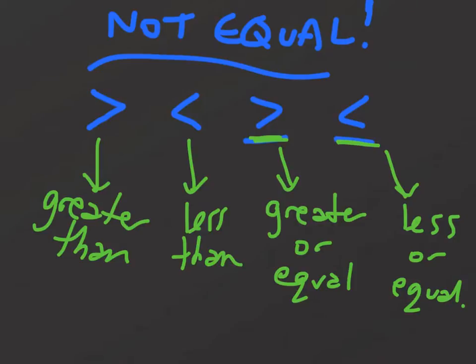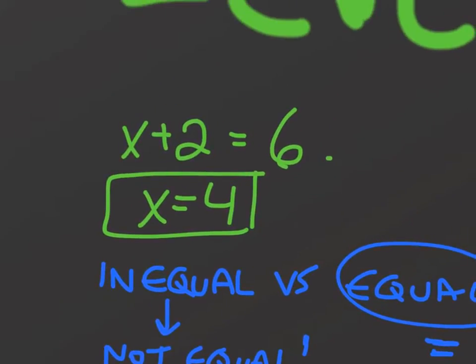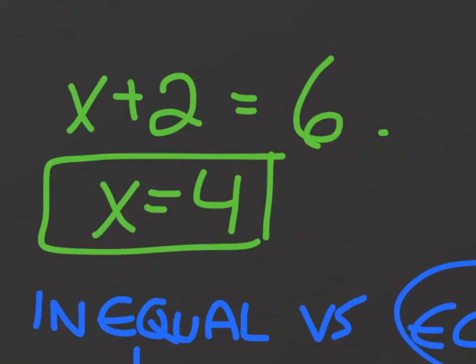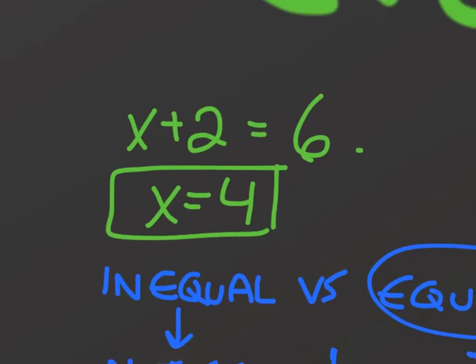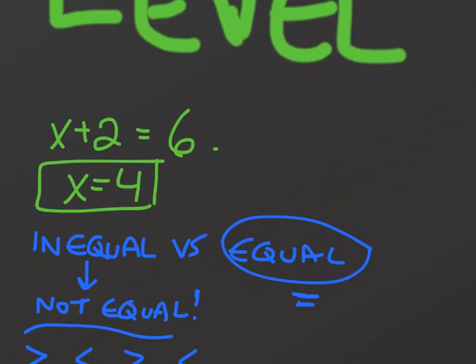Now if we go back up to this example I wrote up here, this was an equation because we have an equal sign. What if we changed it? Instead of an equal sign, let's say we have the inequality x plus 2 is greater than 6.